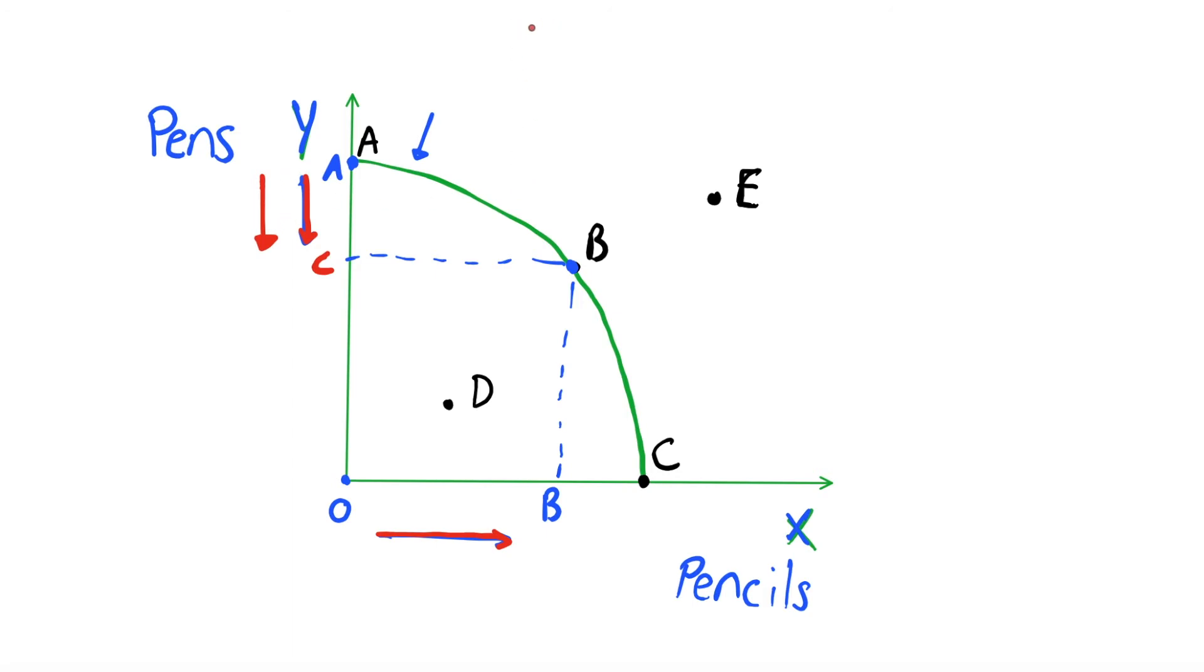And this is why our PPF is sloping downwards. This curve has a negative slope at all points. It's always sloping downwards. As we increase our number of pencils, we're going to have to decrease our number of pens. And the same is true the other way around. If we want to increase the number of pens we produce, and we move from B to A, we're going to have to decrease the number of pencils. And this is what we mean by a trade-off.